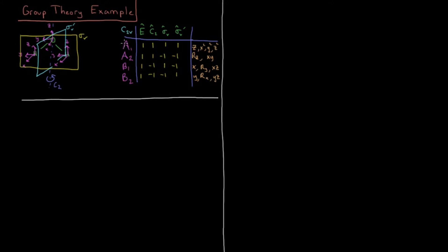And I have my character table here: A1, A2, B1, B2. But there's an extra row here that I'm going to use, and I'm going to show you how to use this extra row that you'll see on the right hand side of character tables, and how that relates to vibrational modes and which ones of them are IR or Raman active.